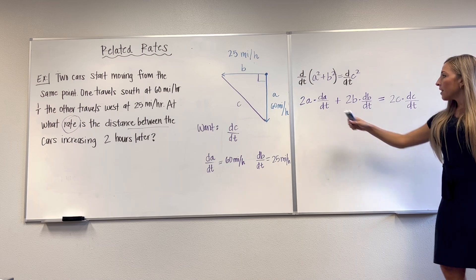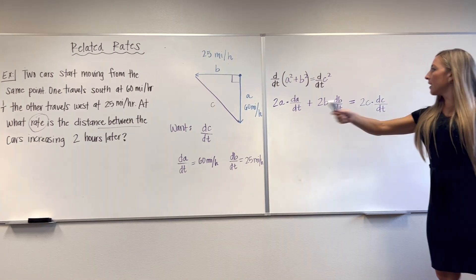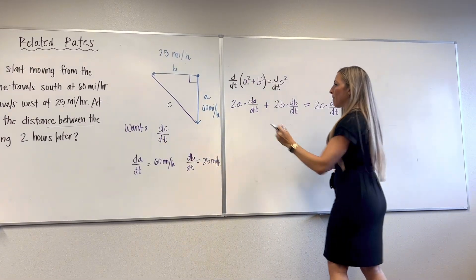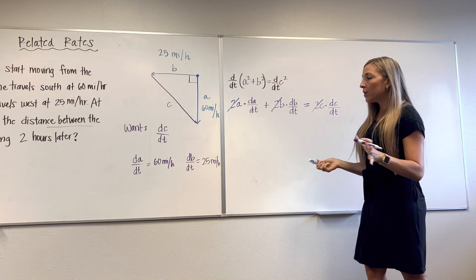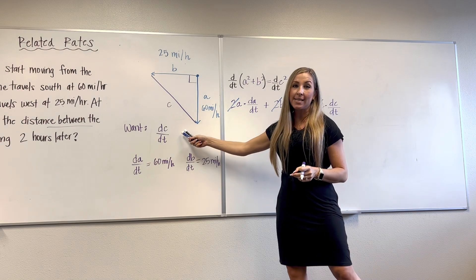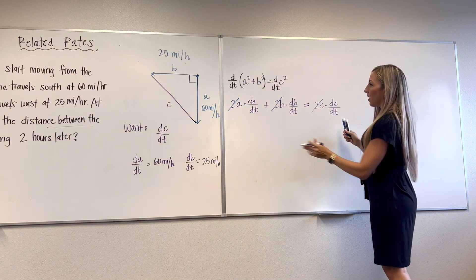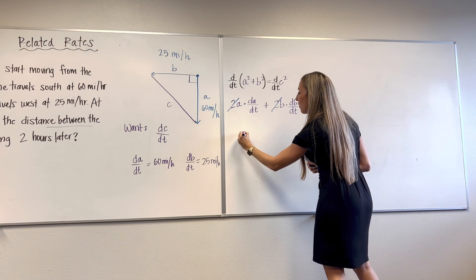Now, I notice here I can cancel out twos from everybody. So let's do it. Gone. And then what are we trying to find? We're trying to find dC/dt. So let me isolate that here. I need to divide by C. So I'm going to rewrite everything.